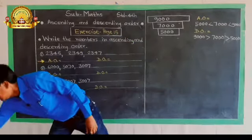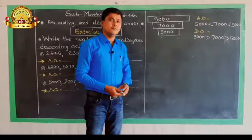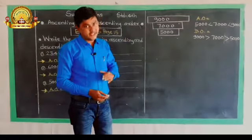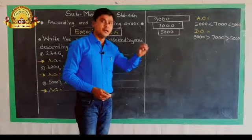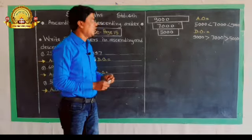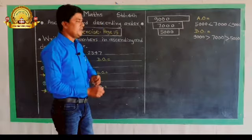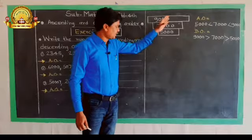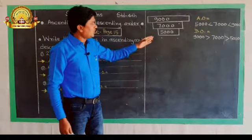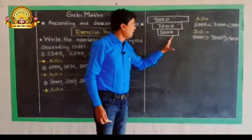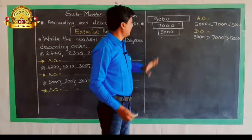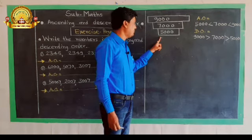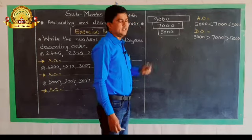Now I am going to solve and explain the concept of ascending and descending order for numbers. I have written some examples on the left side and drawn figures. In the first figure I have the numbers 5,000, 7,000, and 9,000. Which is the smallest among these?